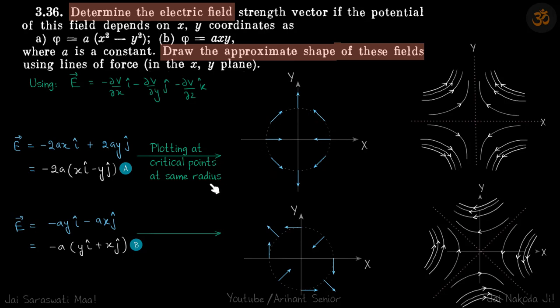And we are doing it at the same radius because you can see that √(x² + y²) which is r. So on any point on this circle, the magnitude of field is going to be same. Because on this circle, √(x² + y²) is constant, which means the magnitude of field is also constant.